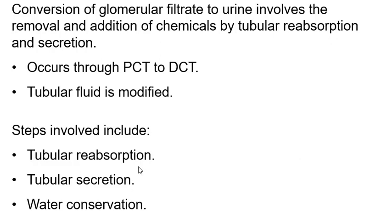These tubes look like hollow spaghetti, and as plasma runs through them some stuff is reabsorbed — it leaves the tube so it won't exit the body as urine. Being reabsorbed means being put back into the body: you take it out of the tube and send it to nearby blood vessels. Tubular secretion, on the other hand, is taking stuff that's outside the tubules and putting it into the tubule so it will be added to the fluid that becomes urine.